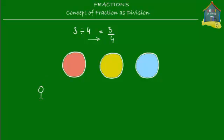So we've got 3 pizzas and we are going to divide them equally among 4 friends. Let's make 4 friends: friend number 1, friend number 2, friend number 3, and friend number 4. These 4 friends are going to get a share of these 3 pizzas, and we want to find out how much that share is equal to. We'll show that share is going to be equal to the fraction 3 quarters or 3 fourths.